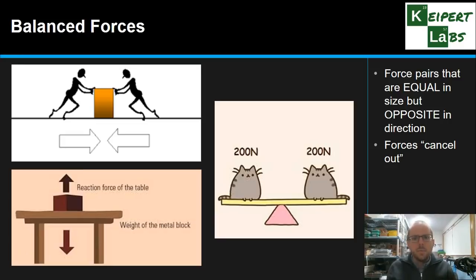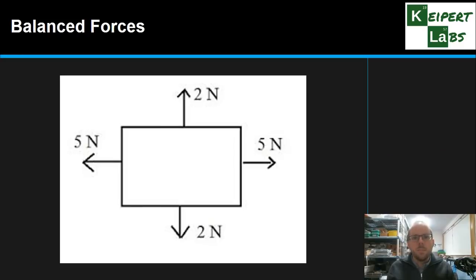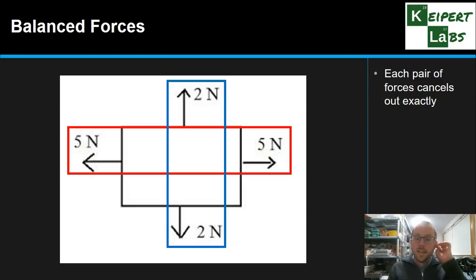To help show you that with a specific example, let's consider a box that's got these four forces acting on it. These forces are actually measured in newtons, the unit of force. Each arrow represents a force in a given direction. We've got a pair of forces highlighted with the red box on the left and right, and another pair of forces highlighted with the blue, which are up and down. But we see that if we look at each of these pairs, they cancel out exactly. We have two newtons and two newtons, five newtons and five newtons, meaning that overall, they've cancelled out.